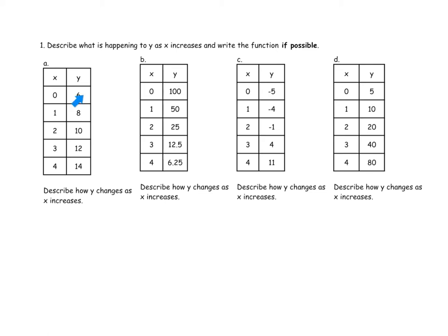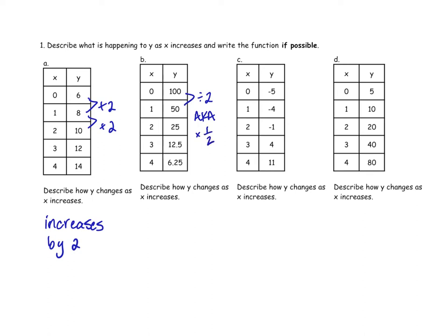We're looking at what happens to Y as X increases. In the first table, we go from 6 to 8 to 10 to 12 to 14 — we are adding 2 every single time, so Y increases by 2 as X increases. On the next table, 100 minus 50 is 50, minus 25 is 25 — we're not subtracting the same amount. So 100 divided by 2 is 50, divided by 2 is 25, divided by 2 is 12.5, divided by 2 is 6.25. We are dividing by 2, also known as multiplying by one half. So Y is multiplied by one half.